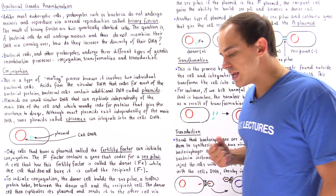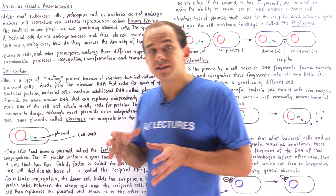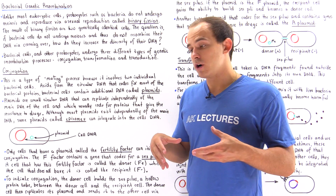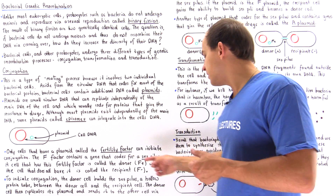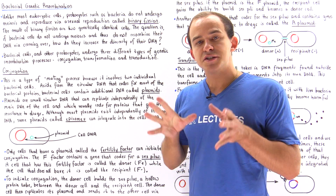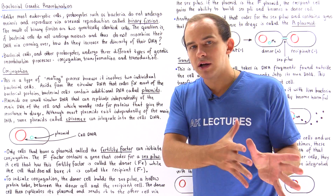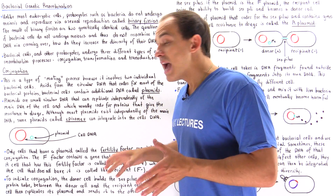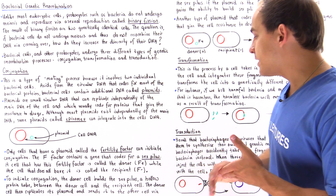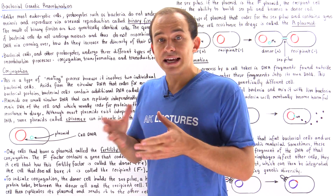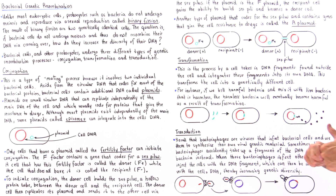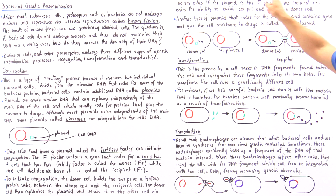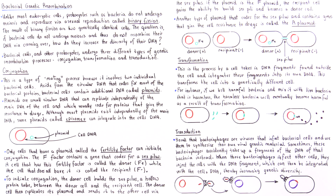To initiate conjugation, the donor cell uses its F-plasmid to produce proteins that build the sex pilus — a hollow protein structure that connects one cell to the other and allows transfer of genetic information. The donor cell then replicates its plasmid and transfers the replicated plasmid to the recipient cell. If the plasmid transferred is the F-plasmid, the recipient gains the ability to build sex pili and itself becomes a donor cell. Let's look at the following diagram.